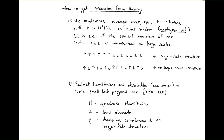The approach taken here is instead of averaging over Hamiltonians, to restrict focus to a specific set of Hamiltonians and observables — namely quadratic Hamiltonians and local observables — with initial states having decaying correlations and no large-scale structure. So not like one half of the system spin-up and one half spin-down.